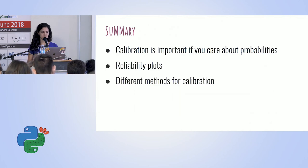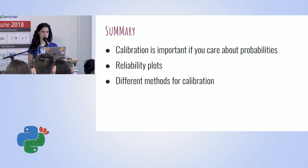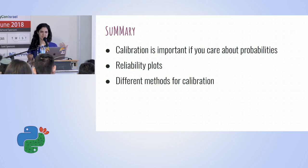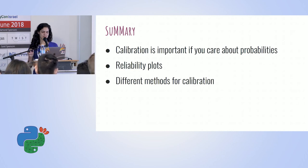The main point of this talk is that calibration is an important concept if you care about probabilities. You should stop focusing only on accuracy and also start looking at the calibration of your models. We covered how to assess calibration using reliability plots, and two calibration methods — Platt scaling and isotonic regression. The key takeaway: go back from this conference and start looking at the calibration of your models.